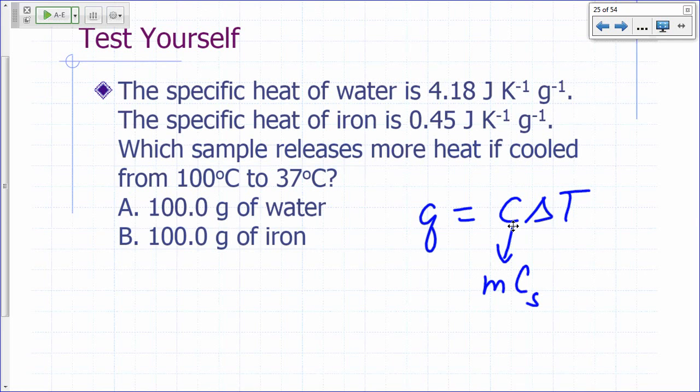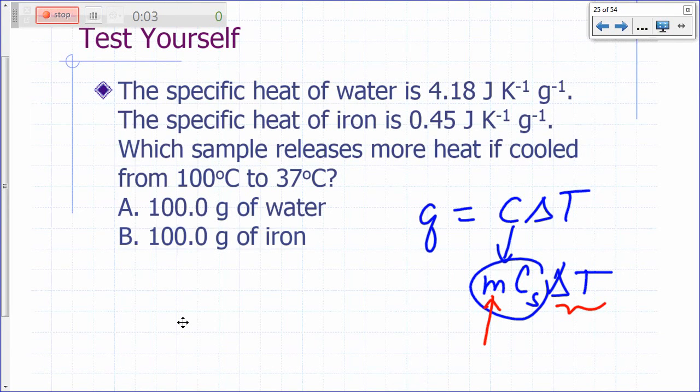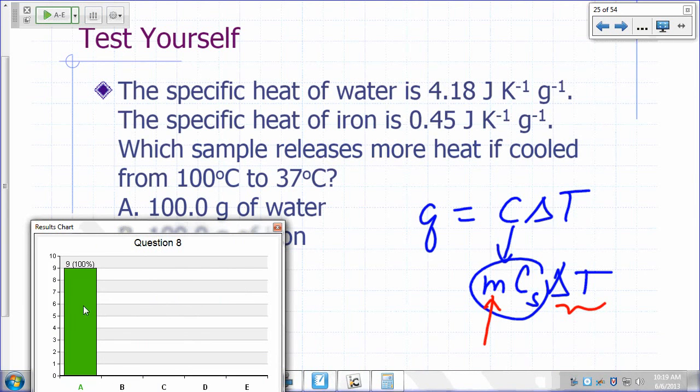What's the formula for Q? C delta T. And what is C? It's mass times the specific heat. I'm going to use C sub s for specific heat. Heat capacity is mass times specific heat. You're looking at the same delta T, from 100 degrees to 37 degrees. You're looking at the same mass. So which one will give you a bigger Q? If it has to cool down from 100 to 37, it has to release heat. Q here is going to be negative. Water releases more heat.